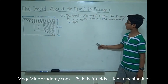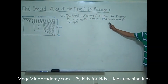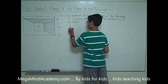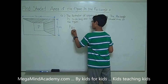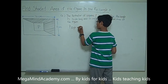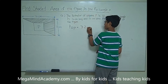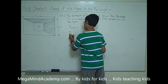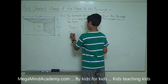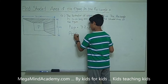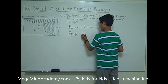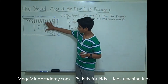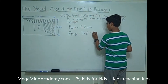It says in the problem that the perimeter of square P is 32 cm. We also know that the perimeter of square P is equal to 4 times the length of square P, or 4L.